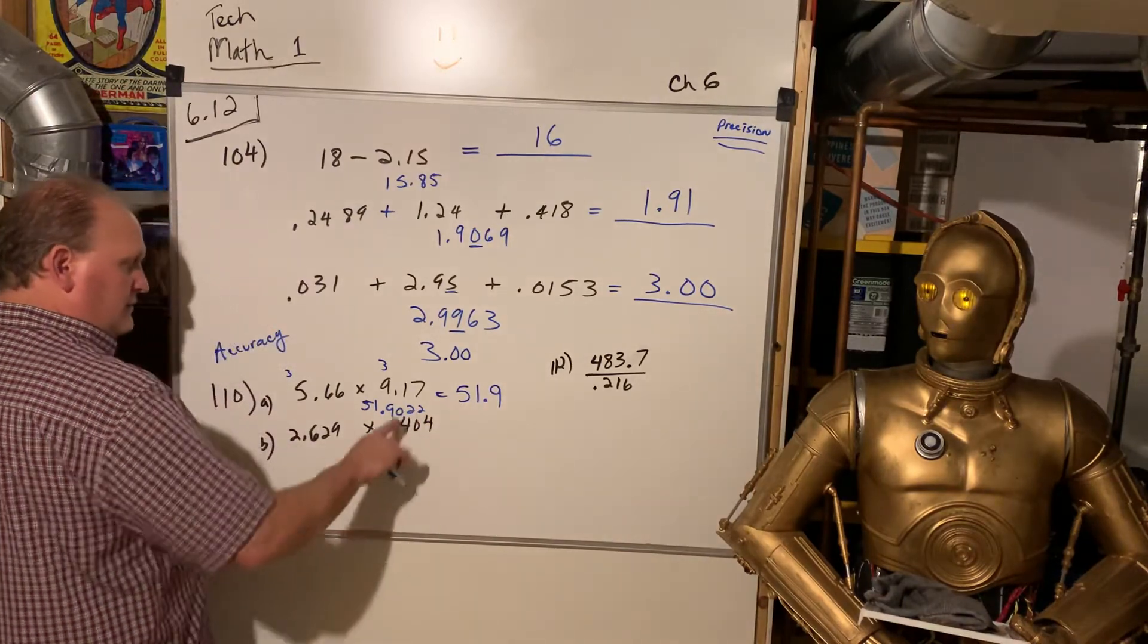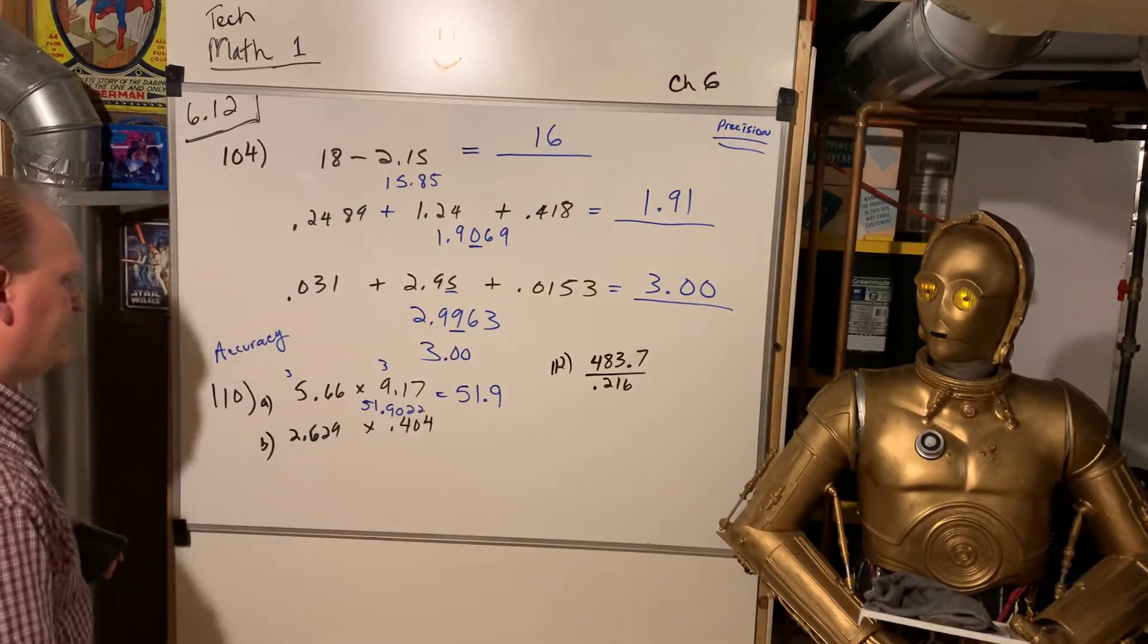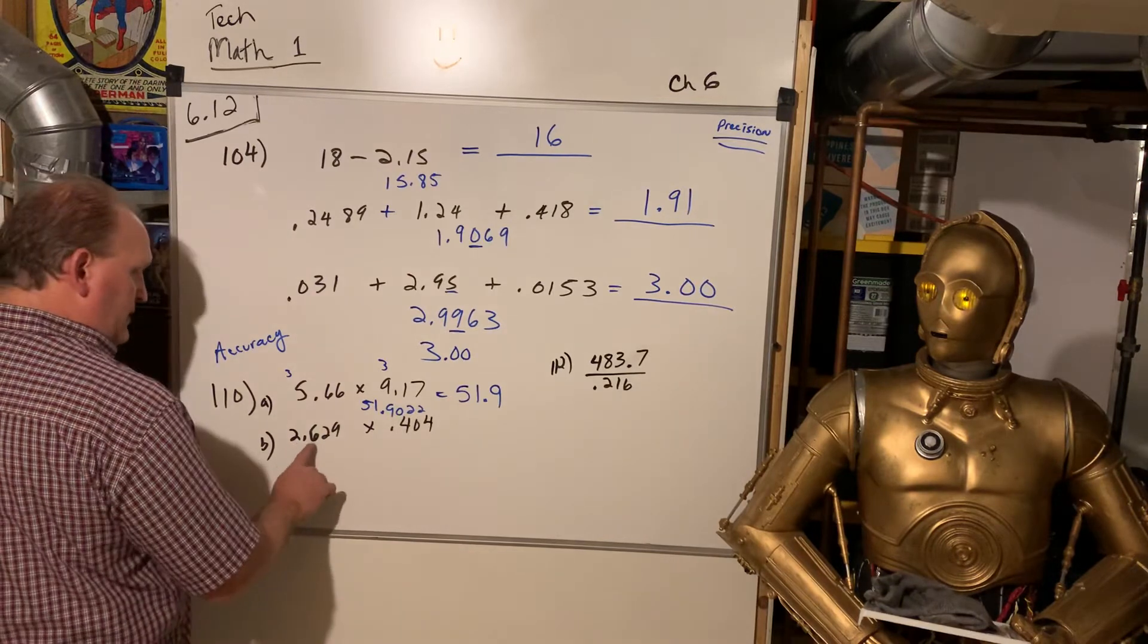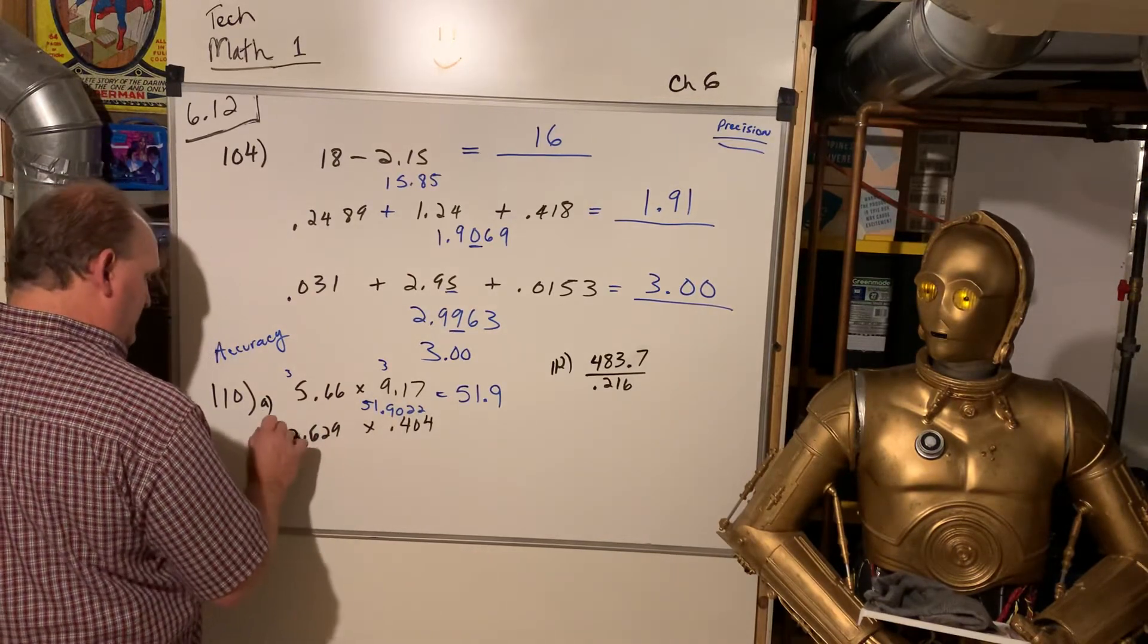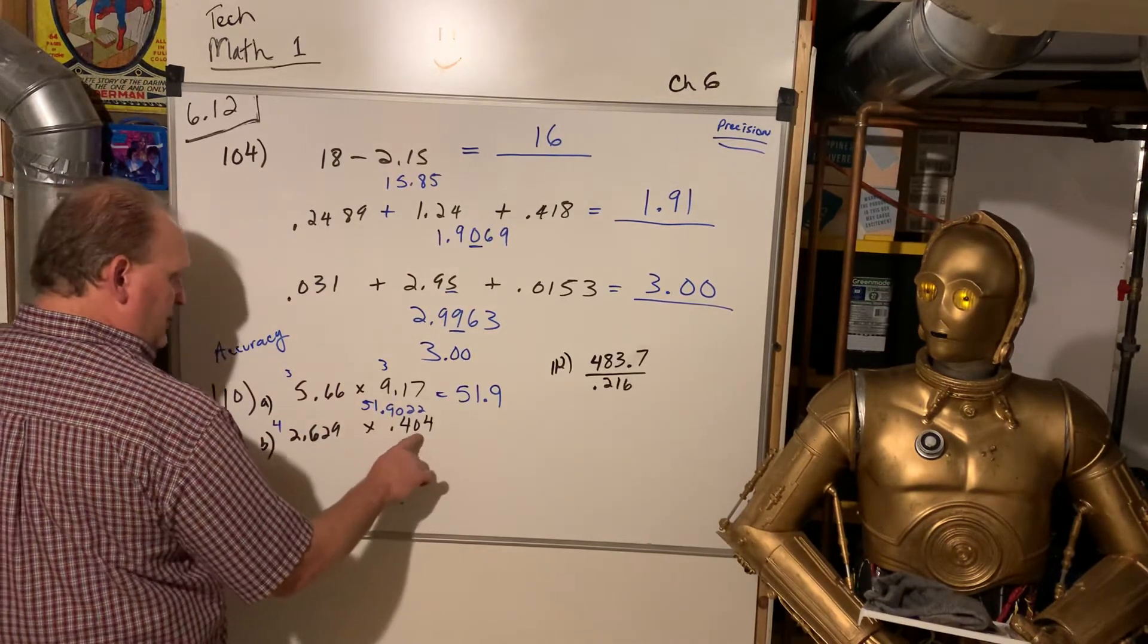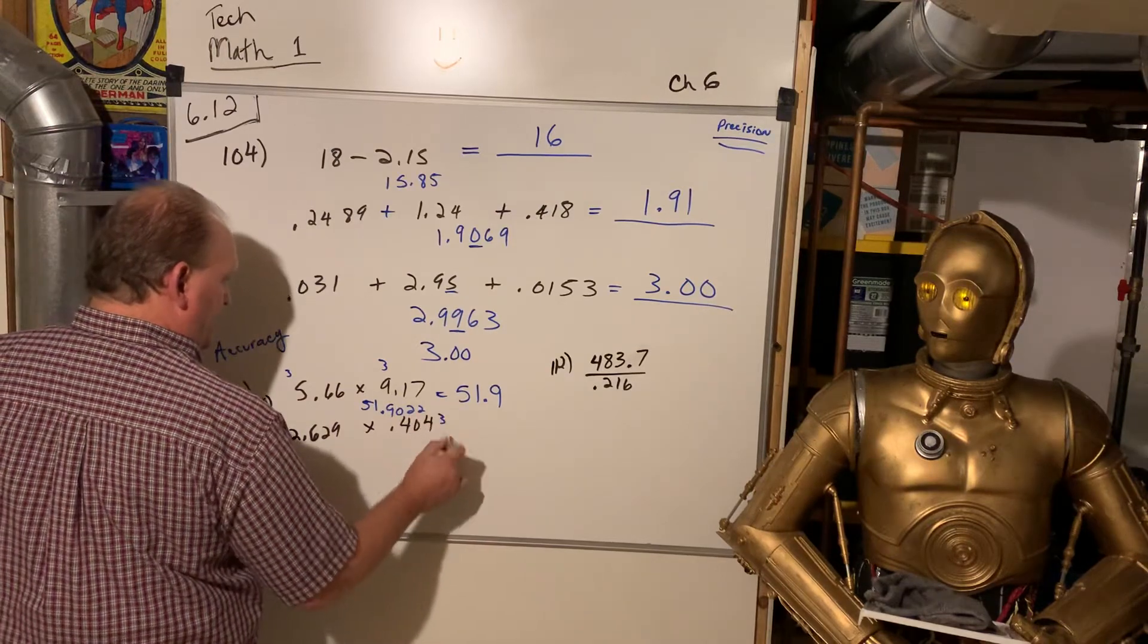I'm going to actually round it to tenths, because I only want 3. And so, the rest of that has to go away. How about if I have 1, 2, 3, 4, versus 1, 2, 3?